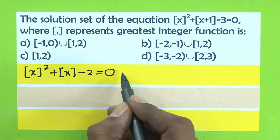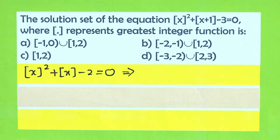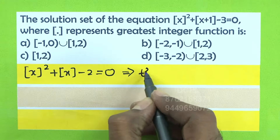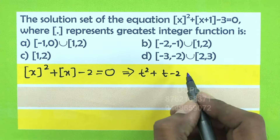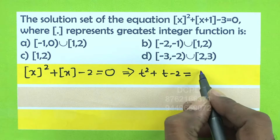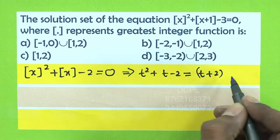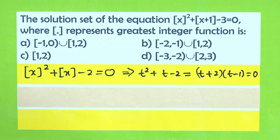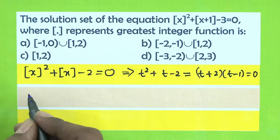This is a quadratic equation of the form t² + t - 2 = 0, where t = [x]. We can factor this as (t + 2)(t - 1) = 0, giving t = -2 or t = 1.